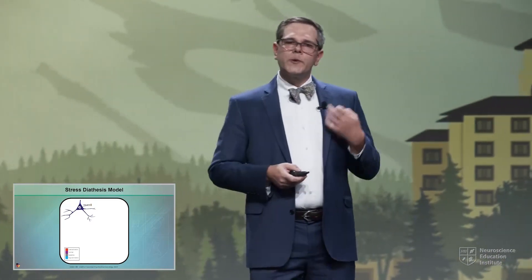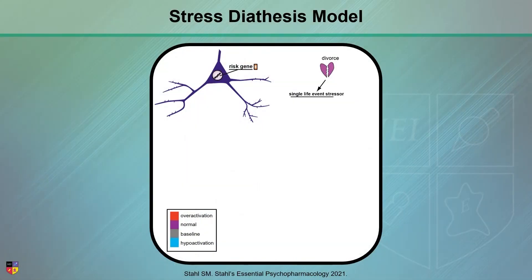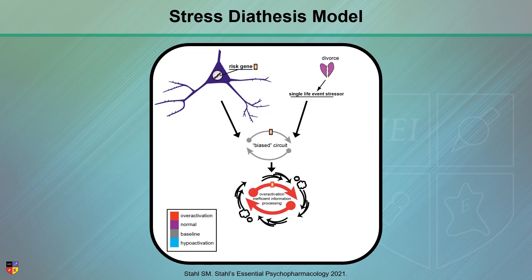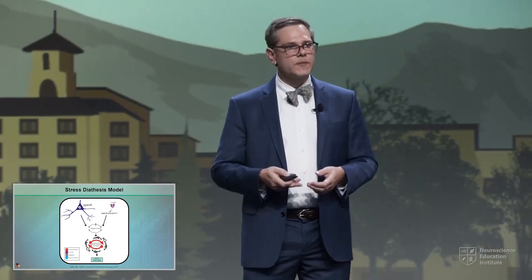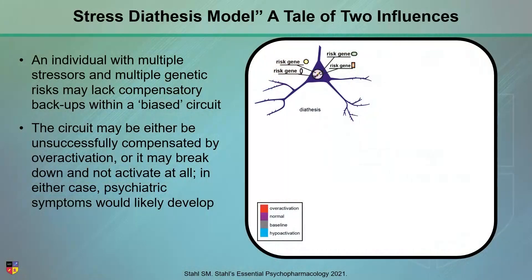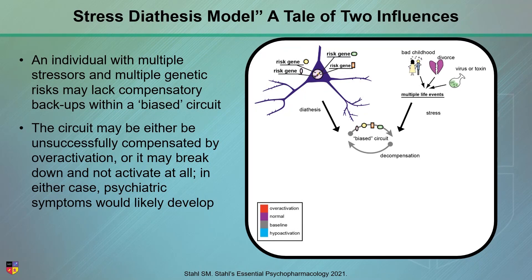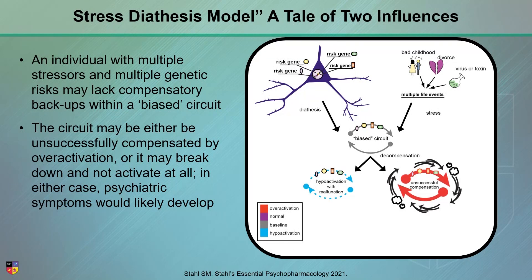Certainly, there are situations where we do have a risk gene, and in those situations when we're exposed to a particular stressor, we have a biased circuit and may have some over-activation, but we don't necessarily manifest post-traumatic stress symptoms. However, in a multiple-hit scenario, wherein we have multiple genes that confer independent risk and then include various stressors in the face of this biased circuit, we can end up with either a hypoactivated circuit or unsuccessful compensation, and that can give rise to these psychiatric symptoms.